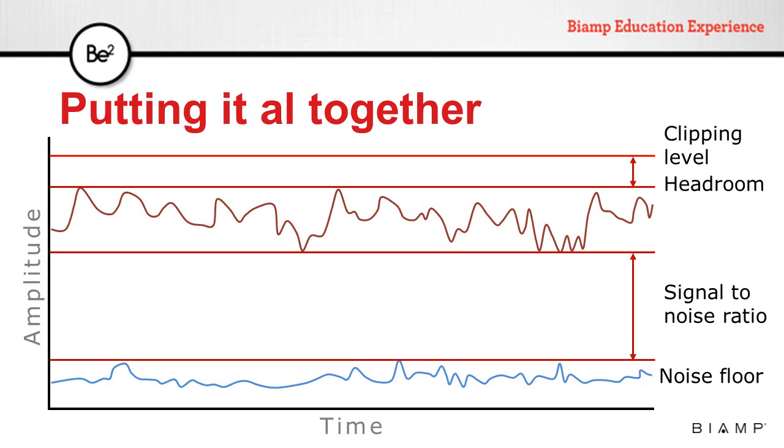On the other side, the difference between the clipping level of the sound system and the loudest sound in our signal is the headroom. For a good sounding system, we need to ensure that we have sufficient headroom to handle the loudest possible sounds.